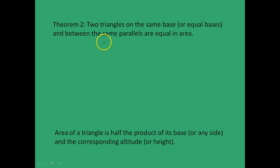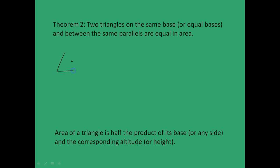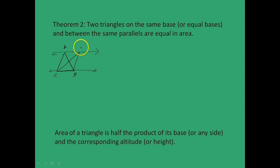Next we look at Theorem 2: two triangles on the same base and between the same parallels are equal in area. We will start with two triangles ABC and DBC sharing base BC and between the same parallels, where AD is parallel to BC. We need to prove that the area of triangle ABC equals the area of triangle DBC.